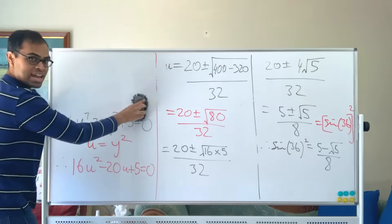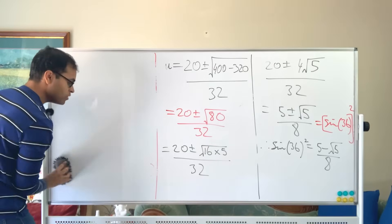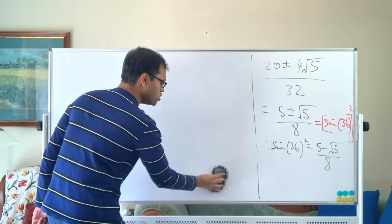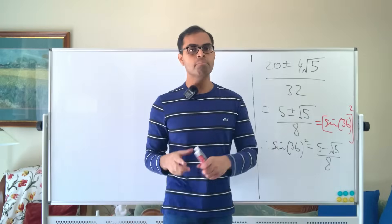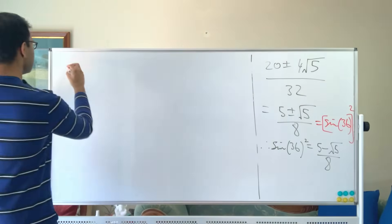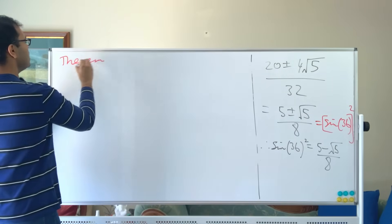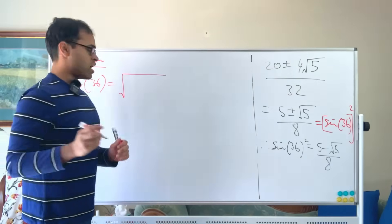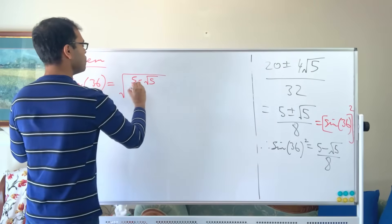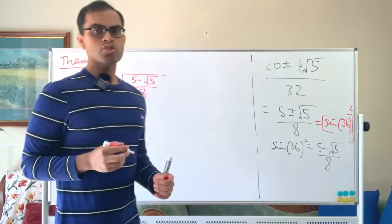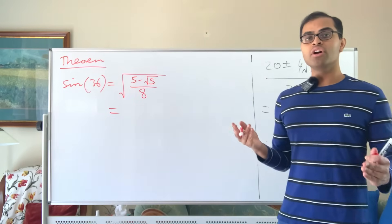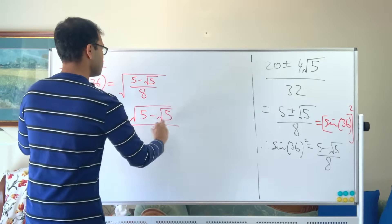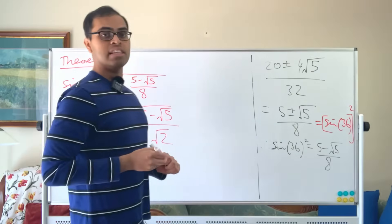Therefore, sine of 36 equals the square root of (5 − √5) / 8. Since √8 = 2√2, this can also be written as √(5 − √5) / (2√2). That's the magic value of sine of 36.